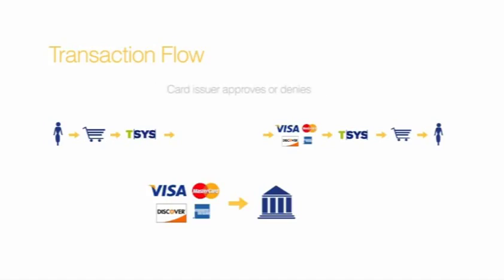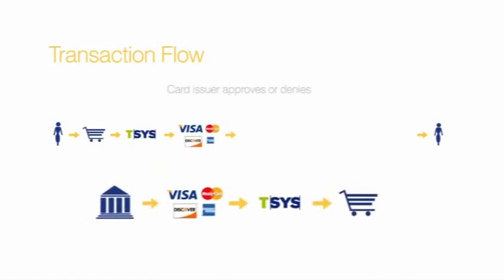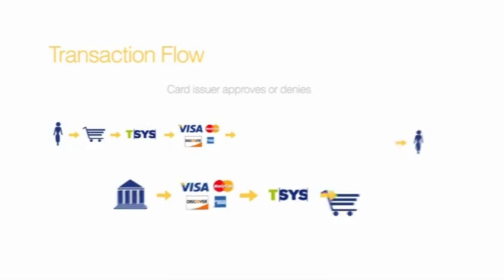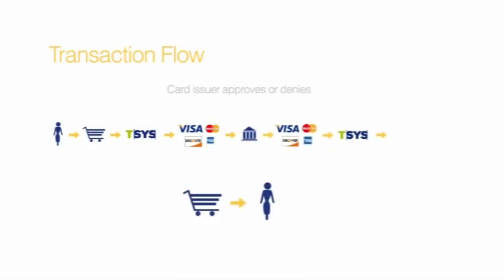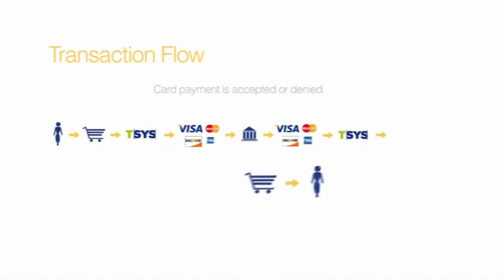The card issuer approves or denies the transaction request and sends the response back to the card brand, which sends the response to the payment processor, which notifies the business or merchant. If approved, the card payment is accepted. If not, the cardholder is offered another way to pay.